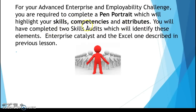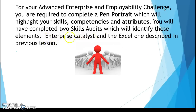The pen portrait will highlight your competencies and attributes. You will have completed two skills audits which will identify these elements — the Enterprise Catalyst and the Excel one described in the previous lesson are the two we've given you, though you can find others if you wish. Use the Enterprise Catalyst because of the PDF report it produces. These skills audits do not need to be sent off with the work — just the pen portrait.